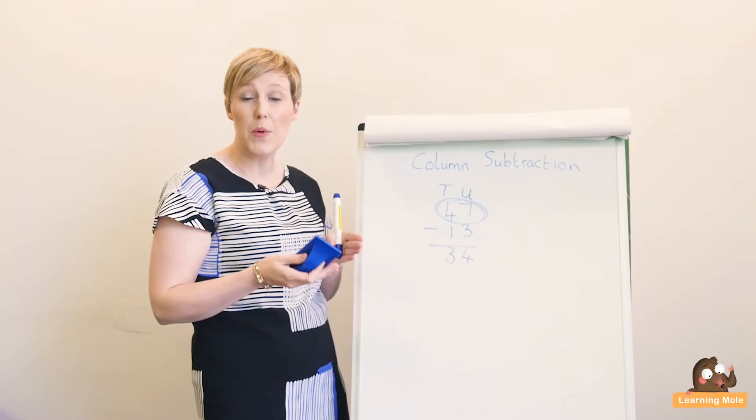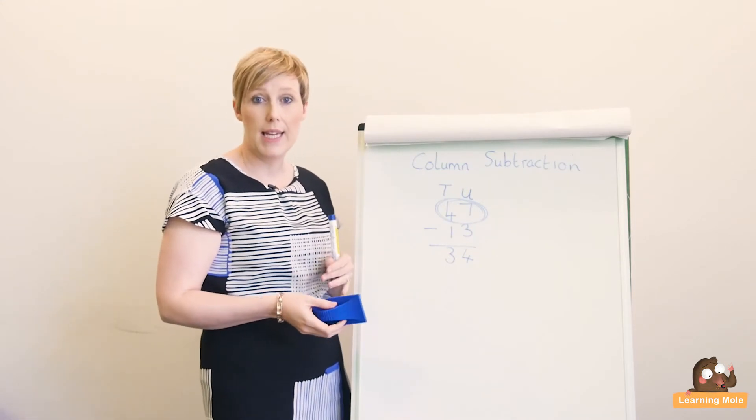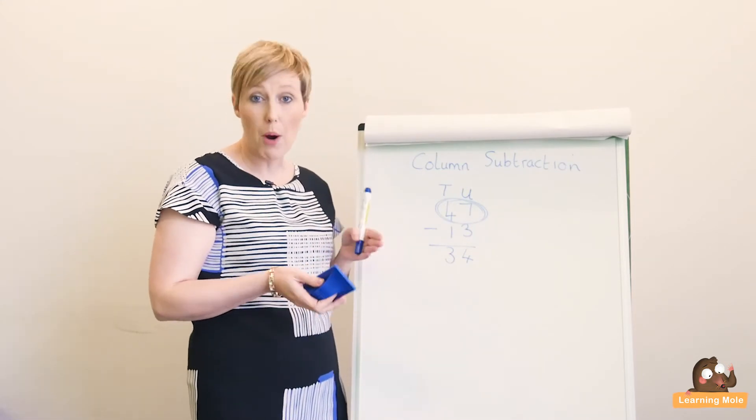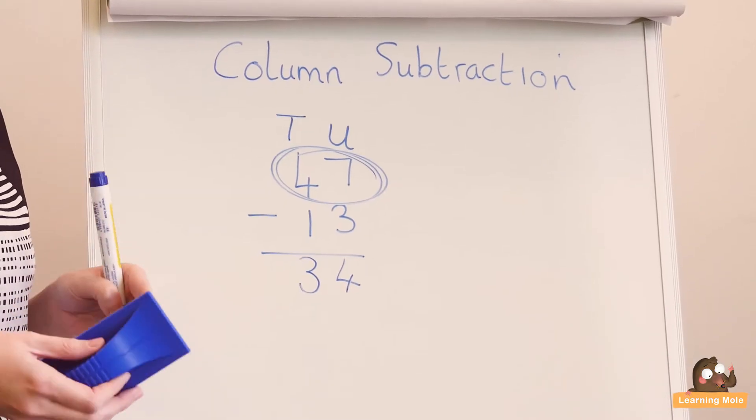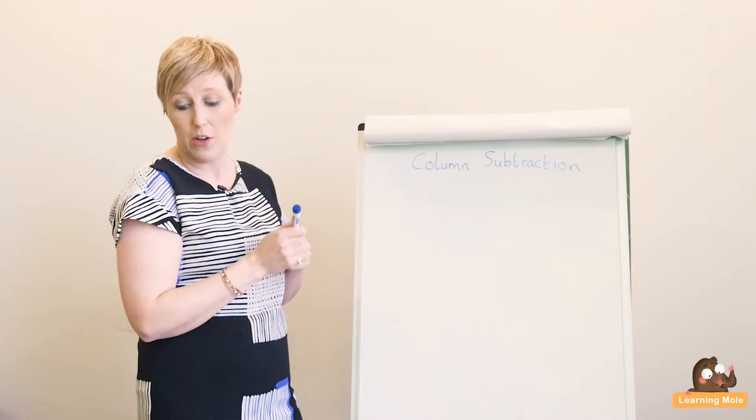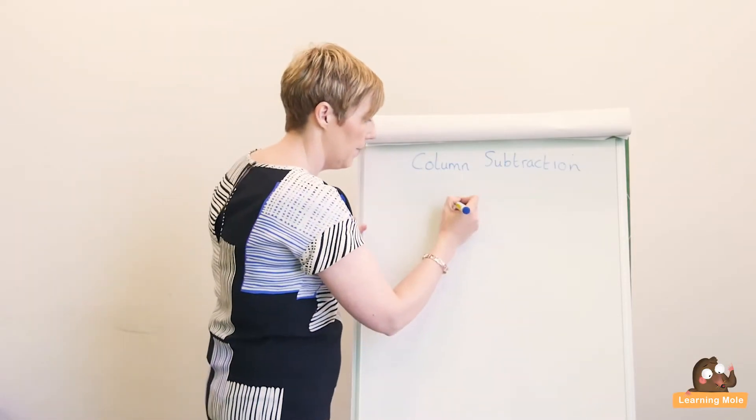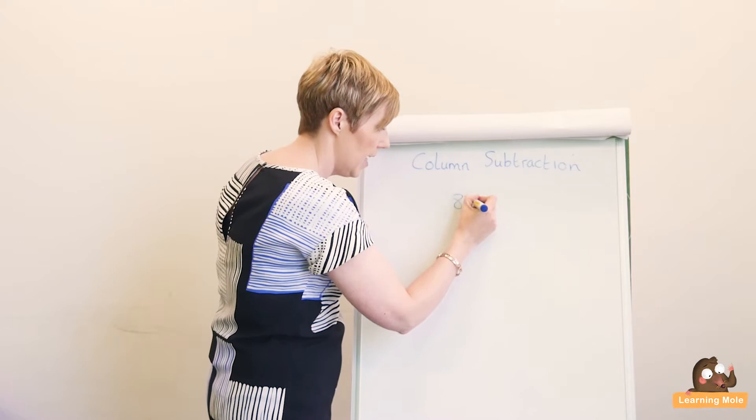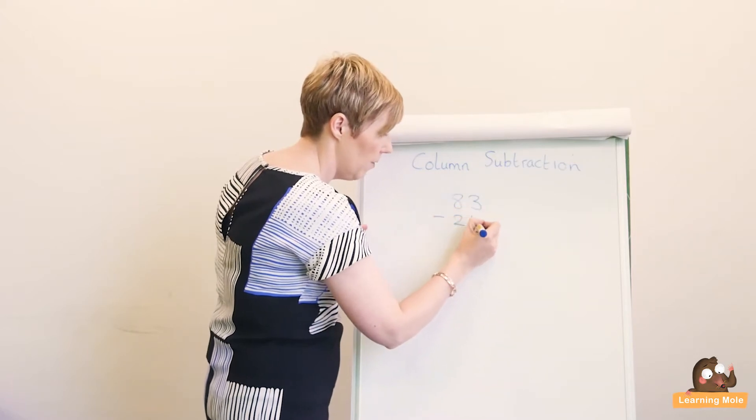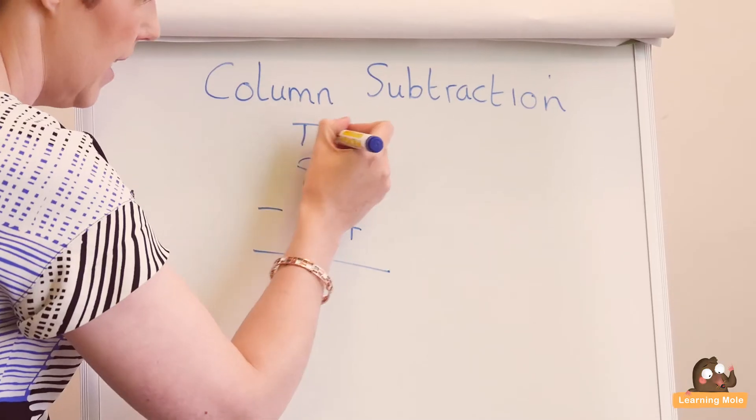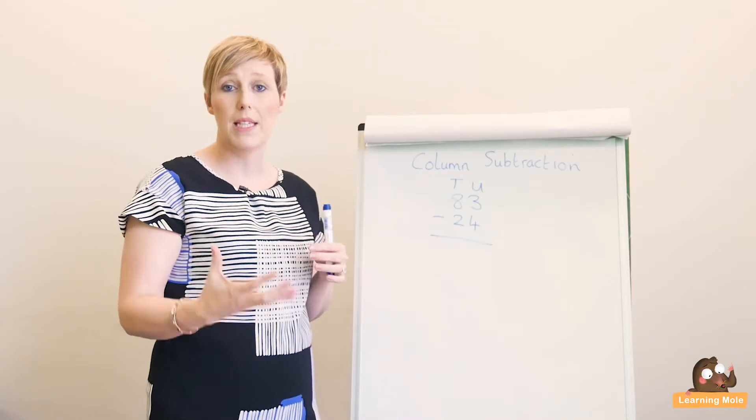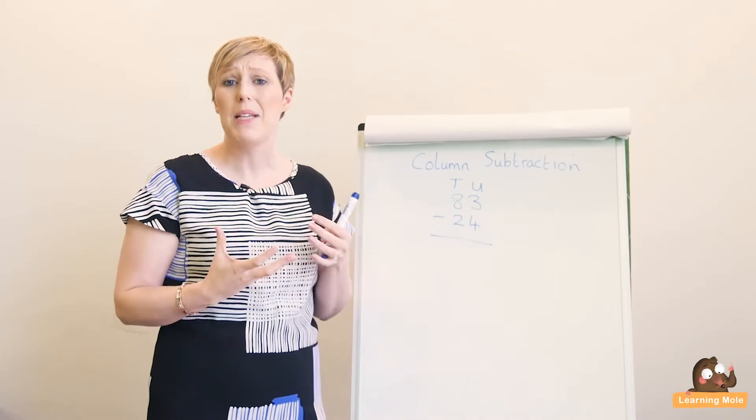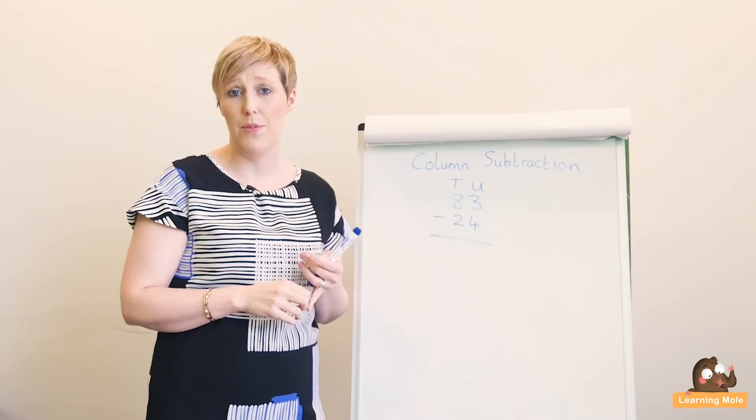Moving on to more difficult numbers when actually the children may have to borrow, where they don't actually have enough in their units so they have to do something slightly different. If we're looking at something like 83 take away 24, you've got your tens and your units again. It's the exact same method, although we want to talk about this time about borrowing.